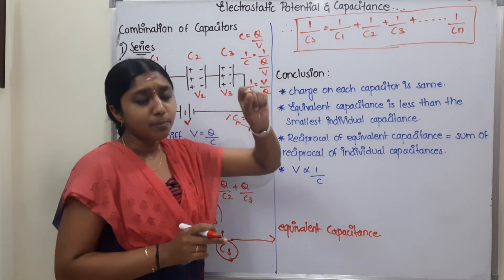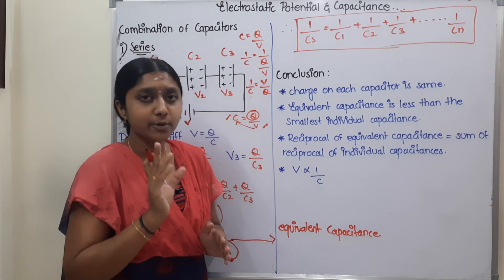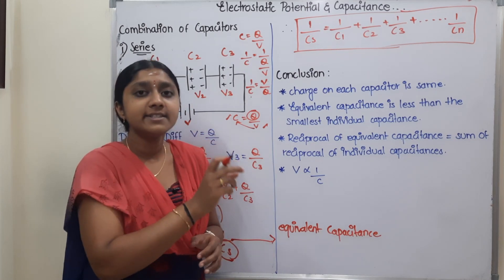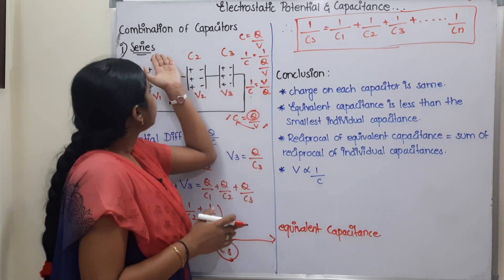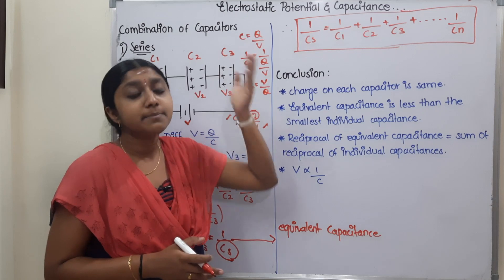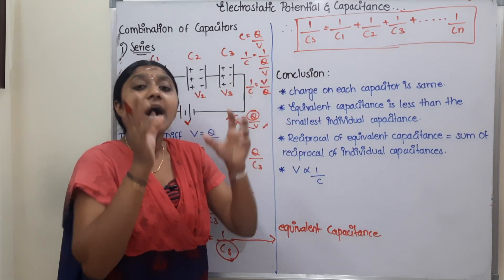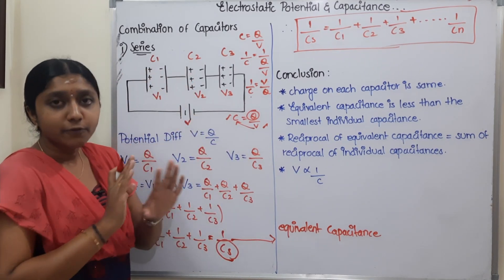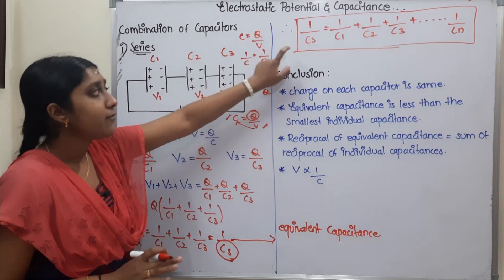Now, you may recall from Class 10, for resistors in series: Rs = R1 + R2 + R3. For resistors in parallel, the reciprocal formula applies. You might be confused — resistors in series use direct addition, but capacitors in series use the reciprocal formula. That is the key difference.